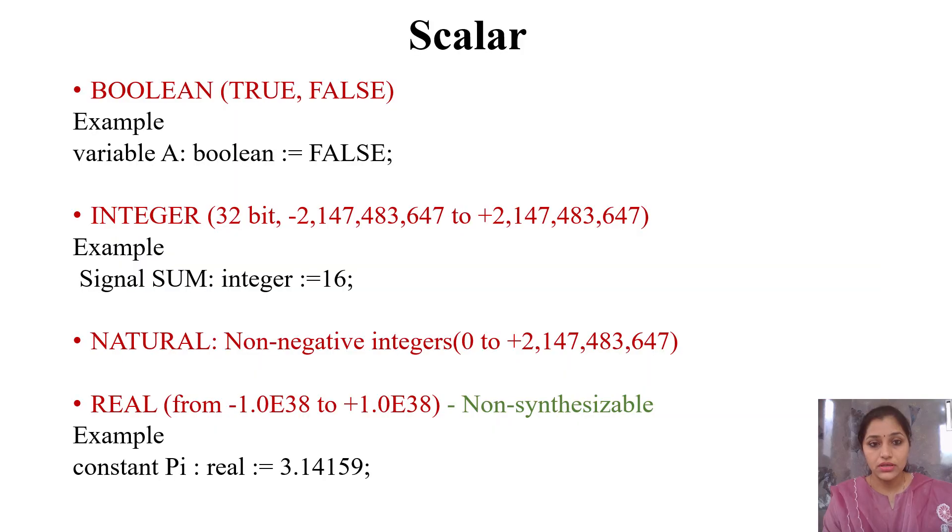Let's start with scalar data types. Boolean has two values: either true or false. For example, variable a is of type Boolean, meaning a can only have true or false value. It cannot have one, zero, three, four, or any other integer value.